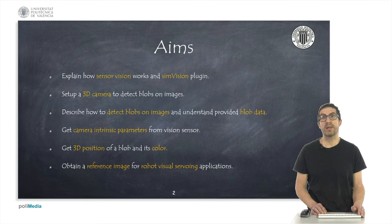I will explain the code that the sensor must include in its own script so that it can detect objects, and also I will explain the meaning of the data provided by the object detection algorithm. I will also explain how to get the intrinsic parameters of the camera from the sensor properties, since we will use these parameters to get the 3D position of the objects.